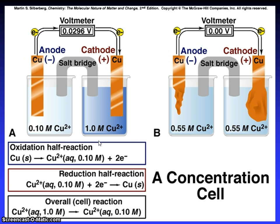You can see the voltmeter and reading of voltmeter. Copper negative, copper positive. Here, concentration 0.110 M copper 2+. Here, 1.0 M copper 2+. Here, 0.55 M copper 2+. Here, 0.55 M copper 2+.